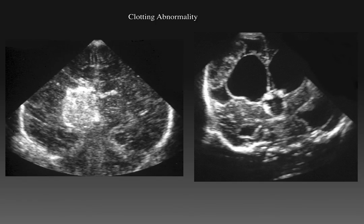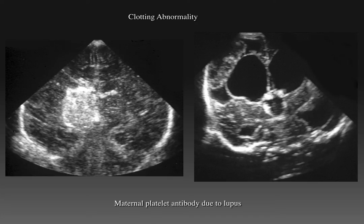However, hemorrhages in term and near-term infants are often different in location, cause, and appearance. Here are two near-term infants with a clotting abnormality. The infant on the left has a brightly echogenic thalamic hemorrhage. The infant on the right has post-hemorrhagic hydrocephalus and a moderately echogenic clot in the parietal region. Both infants were infants of mothers who had lupus and had platelet antibodies.